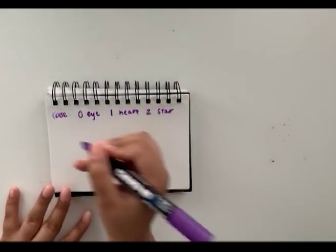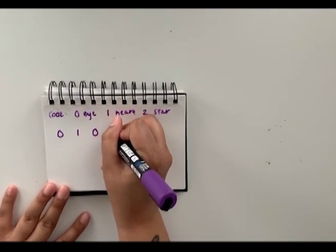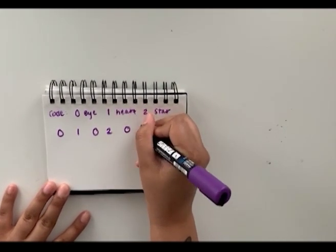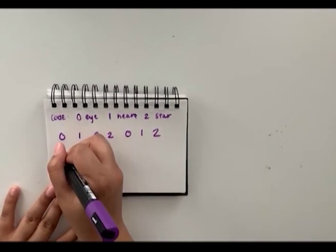So my code is going to be written as zero, one, zero, two, zero, zero, one, two. And then we just follow this code to draw out our pattern.